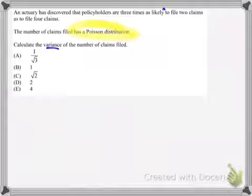If the number of claims filed has a Poisson distribution, very important here, we need to calculate the variance of the number of claims filed. Now, if we know the Poisson distribution, we immediately realize that this is going to be a really great question. And that is because in the Poisson distribution, the variance is equal to lambda, lambda being the parameter of the Poisson. So if we can figure out lambda, then we know the answer to this question.